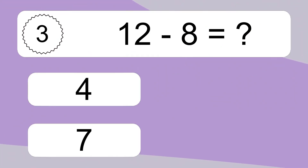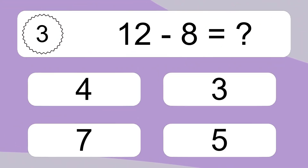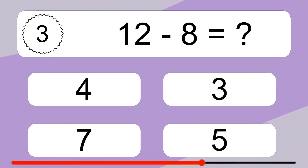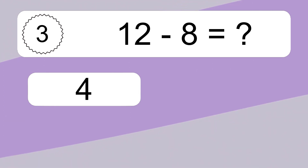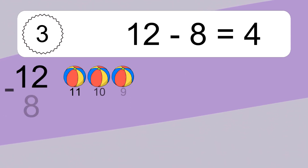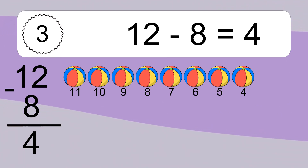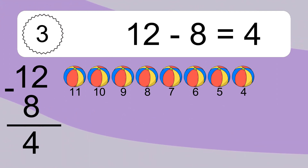12 minus 8 equals what? 12 minus 8 equals 4. Let's count it: 11, 10, 9, 8, 7, 6, 5, 4.